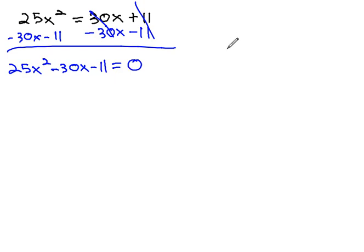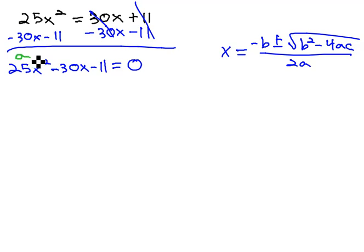Now we're ready to use the quadratic formula, which says x is equal to the opposite of b, plus or minus the square root of b squared minus 4ac, all over 2a. And we can recall that a is the x squared number, b is the x number, and c is the constant term. It's really important that the equation equals 0.